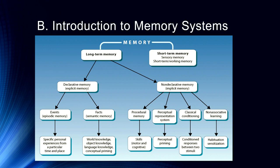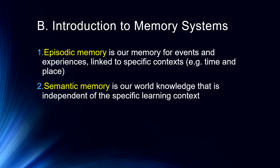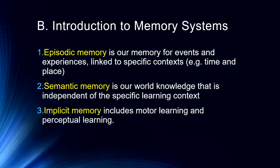We also have all sorts of non-declarative memories. We have procedural memories — skills that can be both motor and cognitive, like playing the piano, tennis, or golf. We have a perceptual representation system, a shorter-term, non-conscious form of memory that holds on to some of our perceptual experiences. And then we have classical conditioning and non-associative learning, which includes habituation and sensitization. To summarize: episodic memory is memory for events linked to specific contexts, times, and places; semantic memory is world knowledge independent of the specific learning context; and implicit memories include motor learning and perceptual learning.